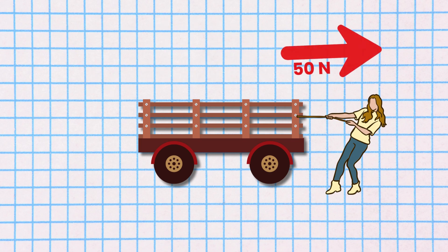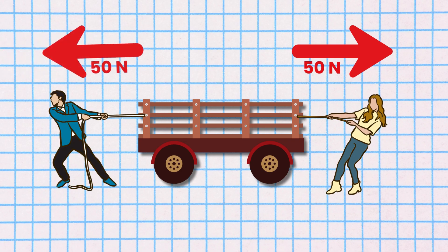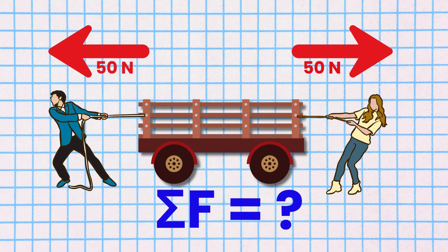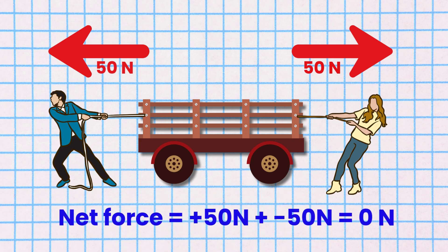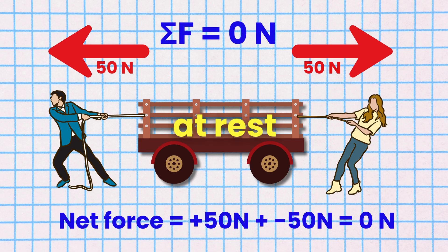Static Equilibrium. If Mole pushes a wagon that is at rest in the yard with 50 newtons to the right and Albert pushes it with 50 newtons to the left, what is the net force on the wagon? The net force equals +50 newtons + (−50 newtons) because they are in opposite directions, so that equals zero newtons. It's written as ΣF = 0 newtons. The wagon was at rest and it continues to stay at rest because the forces are balanced.